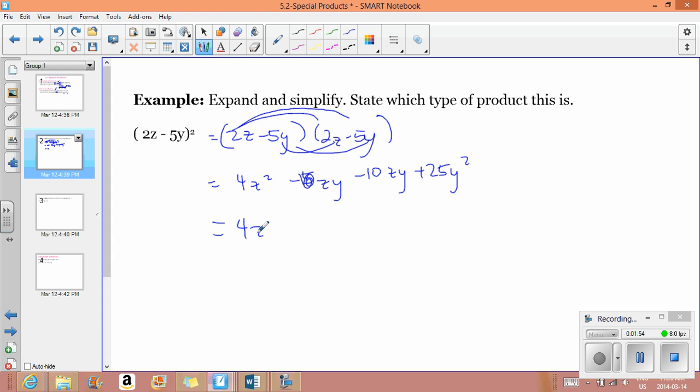Getting your like terms together, 4z² and then we have negative 10 and negative 10, so minus 20zy plus 25y². Notice you could have just squared this and got 4z², squared this and got 25y², and then done this times this and then times by 2 and you would have got your middle term.